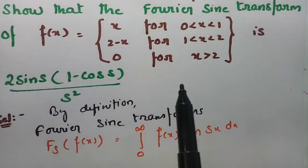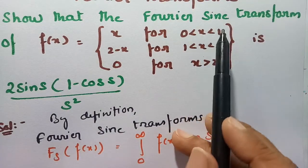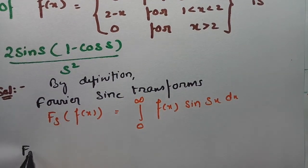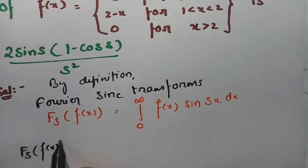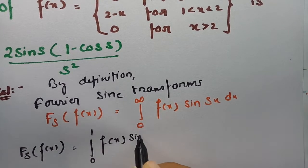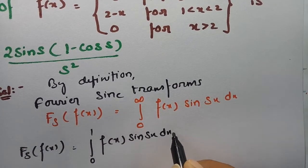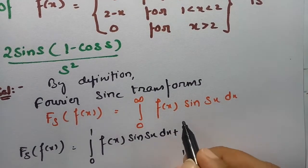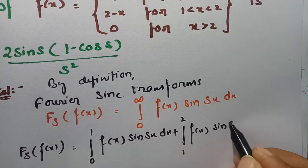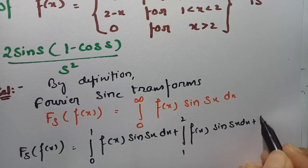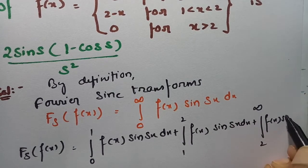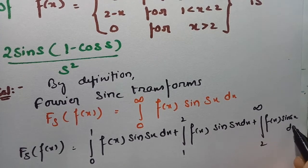We need to introduce the limits 1 and 2. So the Fourier sine transform of f(x) equals the integral from 0 to 1 of f(x) sin(sx) dx, plus the integral from 1 to 2 of f(x) sin(sx) dx, plus the integral from 2 to infinity of f(x) sin(sx) dx.